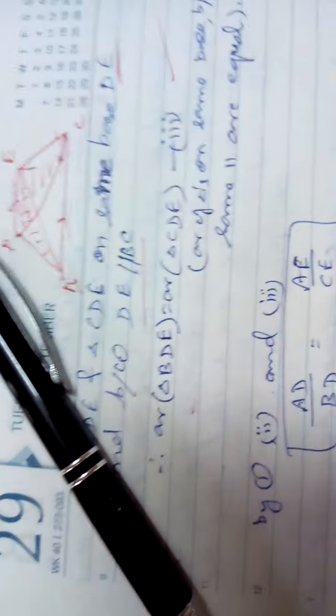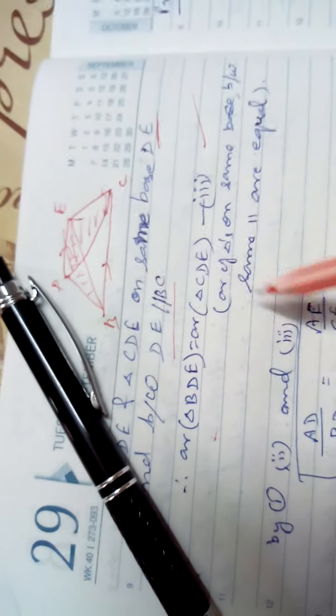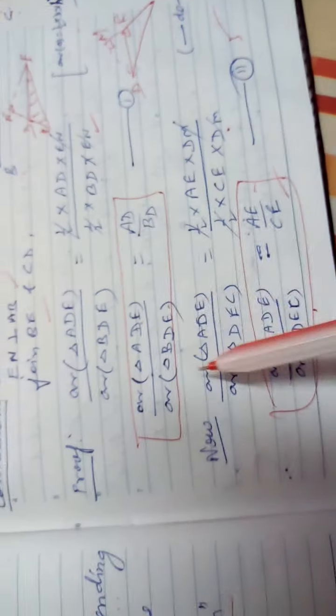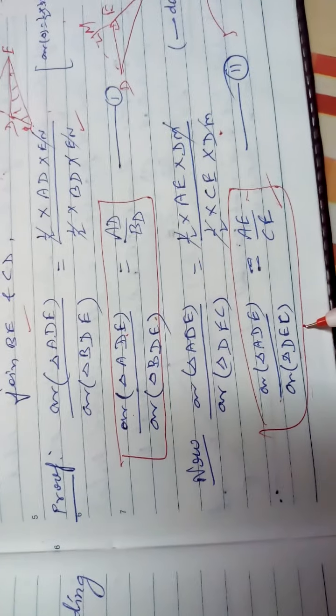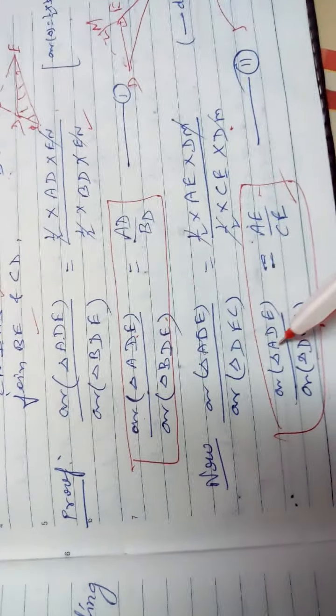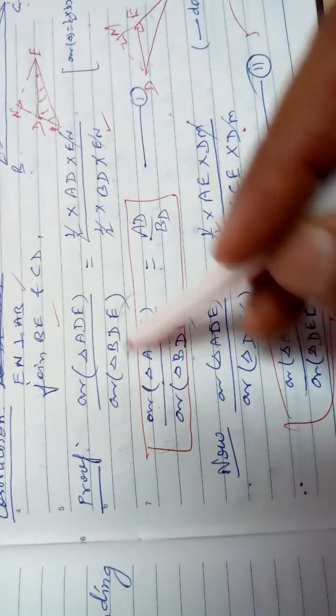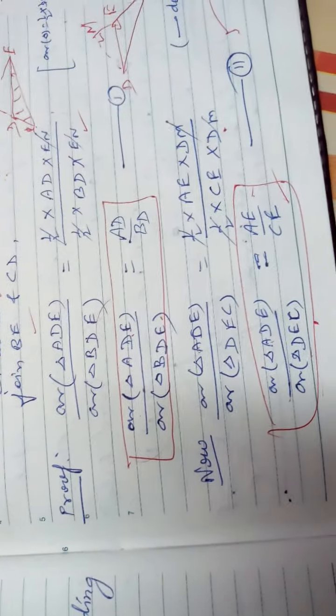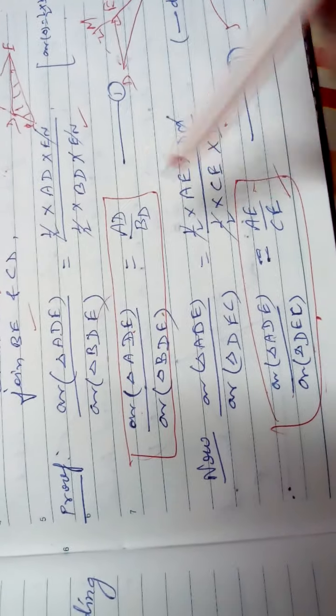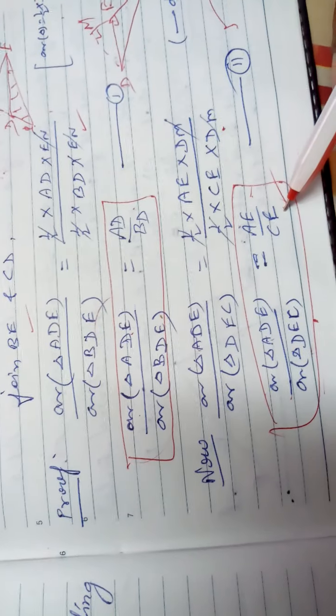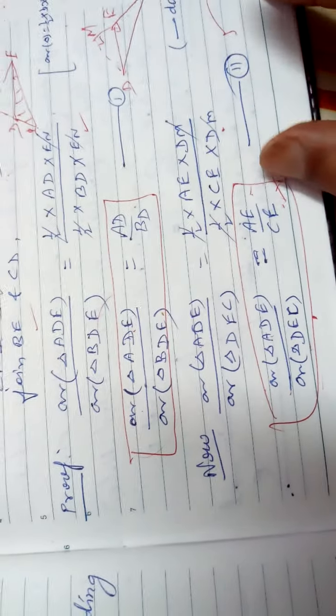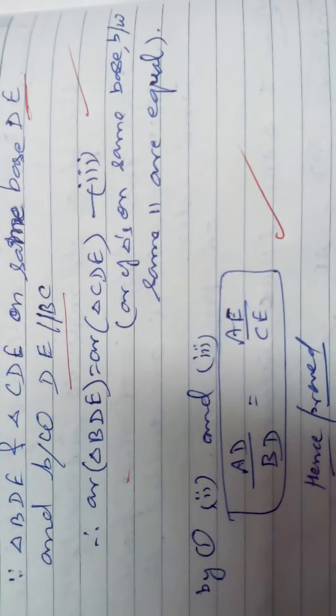Using this third equation: since the denominators of equations one and two are equal (area BDE = area DEC), and the numerators are both area ADE, the left-hand sides are equal, so the right-hand sides must also be equal. Therefore AD upon BD equals AE upon EC. Hence proved.